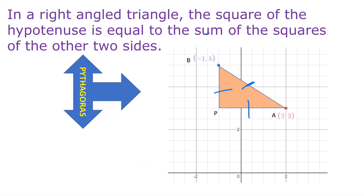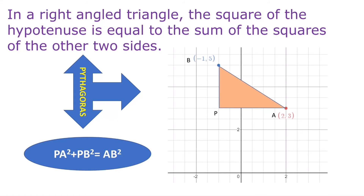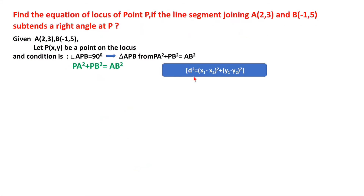The condition is AP² + PB² = AB². We will find the distances PA, PB, and AB and substitute in the formula. Using the formula d² = (x₁ - x₂)² + (y₁ - y₂)², which is the formula for distance between two points used in all these problems.